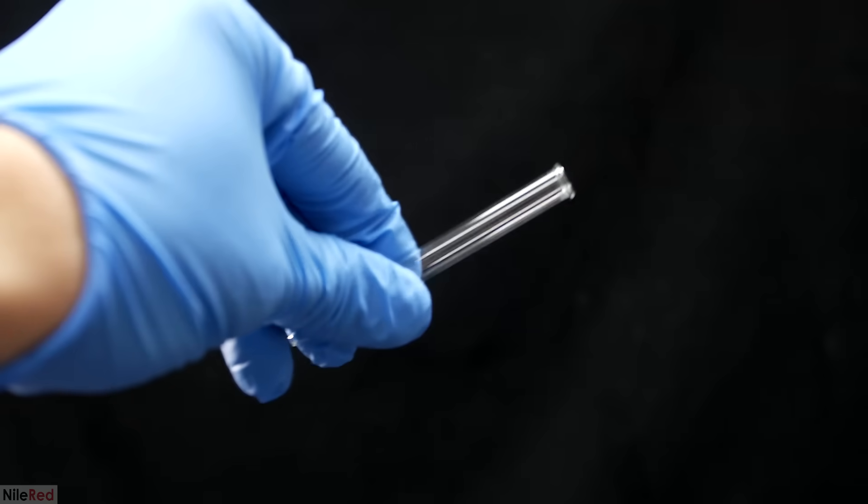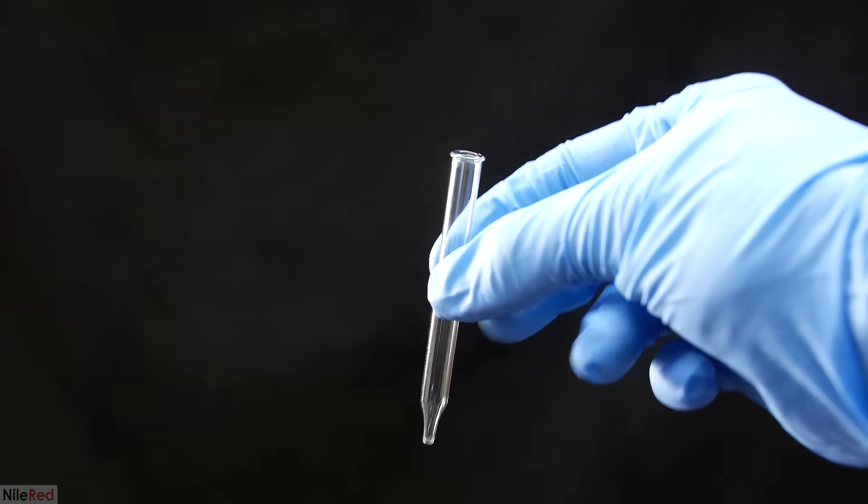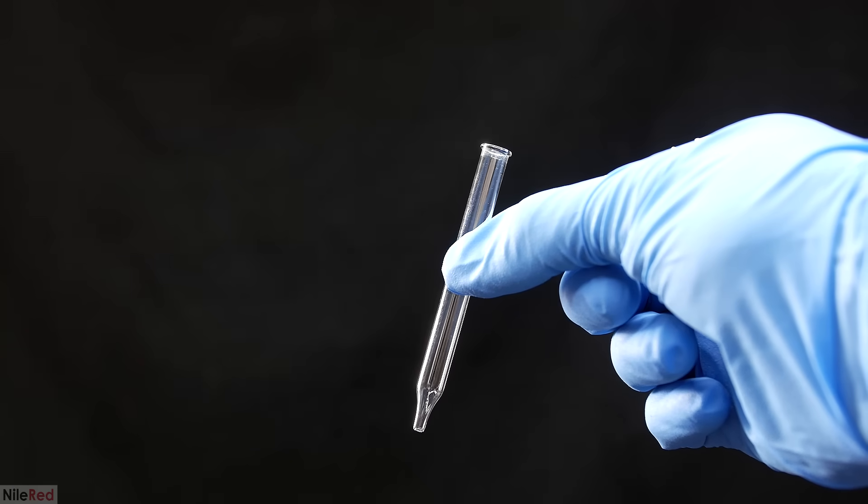Okay, so now to make some really bad glow sticks, and the first thing I need to do is seal everything except the peroxide in a glass tube.